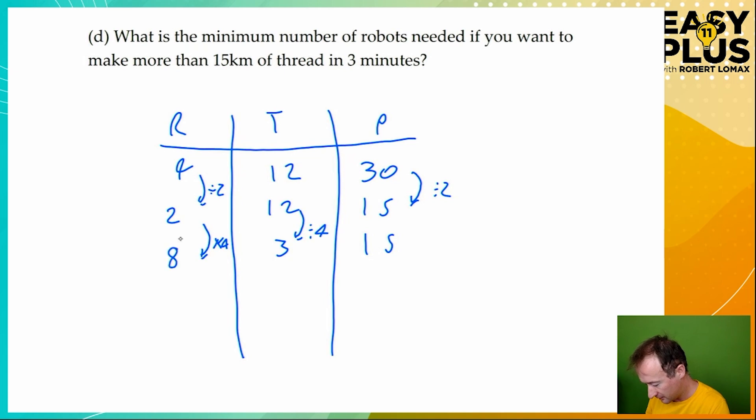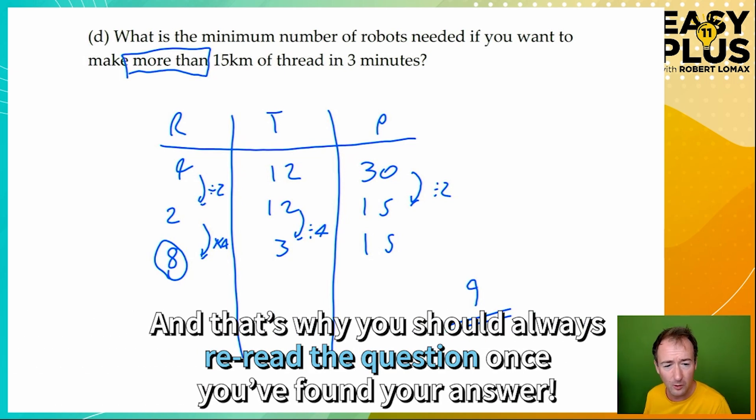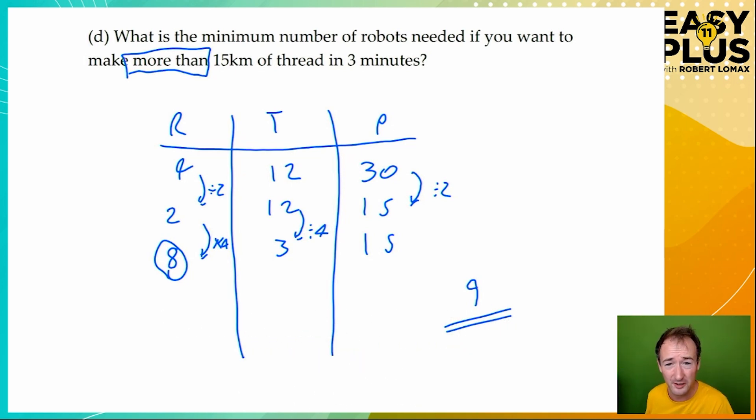And 2 times 4 is 8. So we know that 8 robots would make 15 kilometers of thread in 3 minutes. But look at the question. We need to make more than 15 kilometers of thread. 8 robots would make exactly 15 kilometers of thread. To make more than that amount, we need at least 9 robots. So that's the answer. Why not 8 and a half robots? Because half a robot wouldn't be able to do anything. We're working in whole numbers of robots here. So the minimum number, the smallest number that would do this job, is 9 robots.